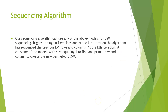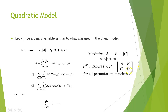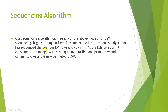Our sequencing algorithm can be used with either the linear or quadratic model for DSM sequencing. It goes through n iterations, and at the kth iteration the algorithm has sequenced the previous k minus 1 rows and columns. At the kth iteration, it calls one of the models with size equal to 1, going into the D matrix and permuting it to produce another set of sub-matrices A, B, C, and D within it — finding the most optimal row and column to create the new permuted binary design structure matrix.